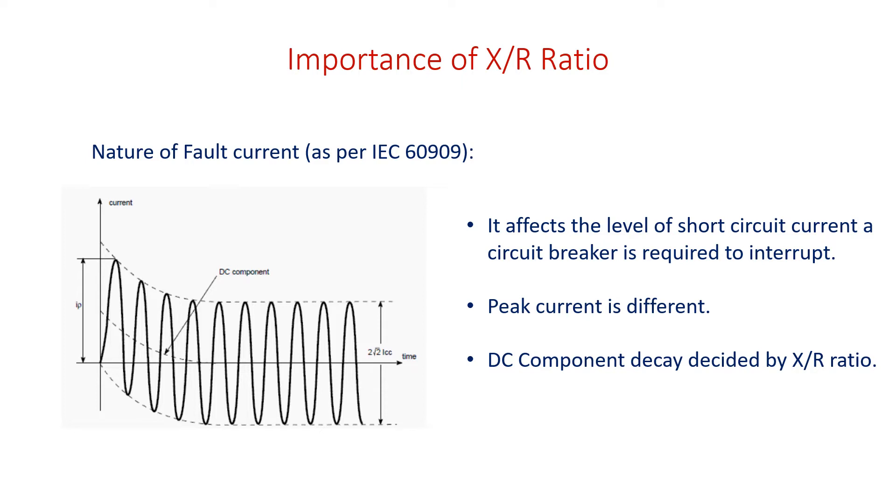X by R ratio affects the level of short circuit current a circuit breaker is required to interrupt. Peak current is different from RMS current and the level of DC component decay is decided by X by R ratio. Let us analyze these importance factors in the upcoming slide.